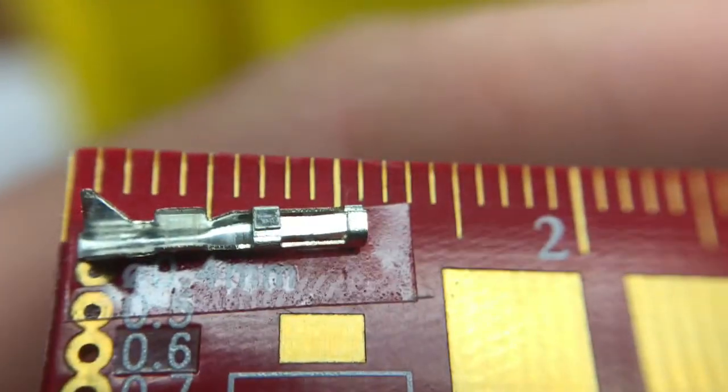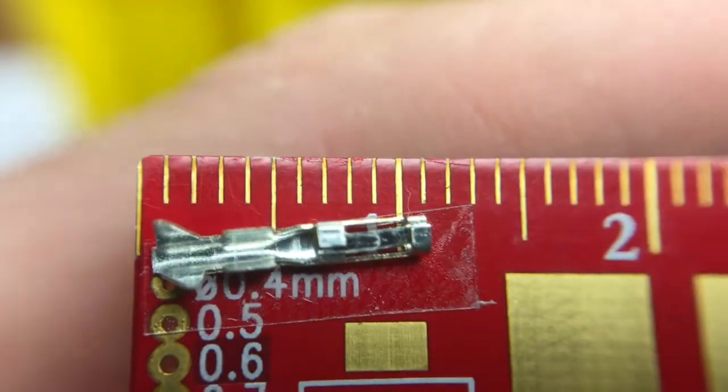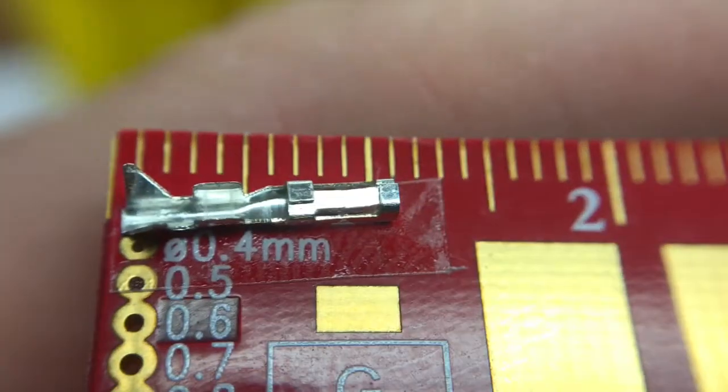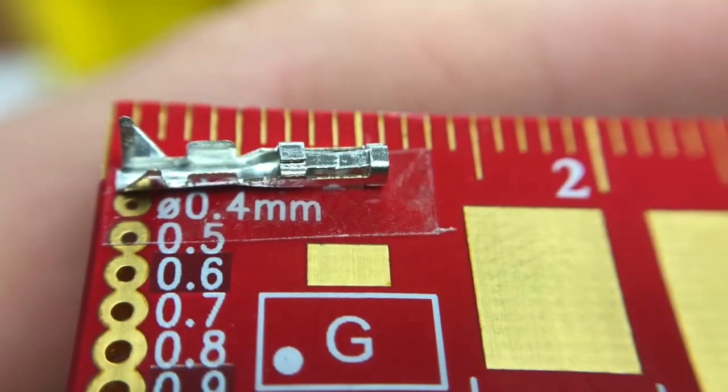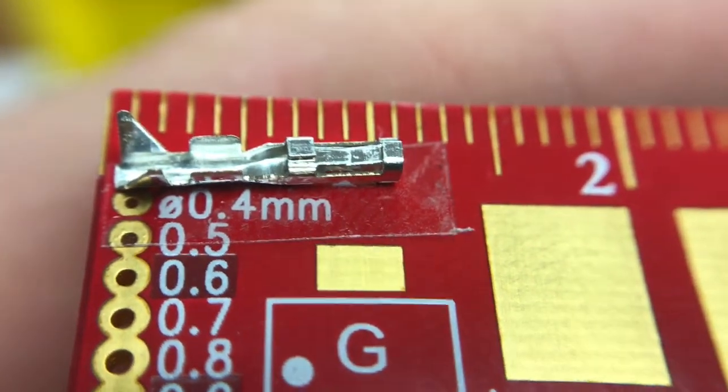Today I'm using my macro lens, so pardon everything that's blurry or shaky. This is the DuPont connector and I want to show you how you can crimp this to your wires to make the connectors look like this one.